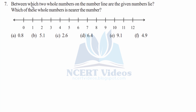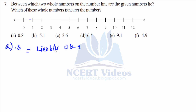Question 7: Between which two whole numbers on the number line are the given numbers? Which whole number is nearer? We have a number line and we have to identify where decimals fall within two whole numbers. 0.8 falls between 0 and 1. Since 0.5 is the midpoint, anything greater than 0.5 lies towards 1. So 0.8 is closer to 1.